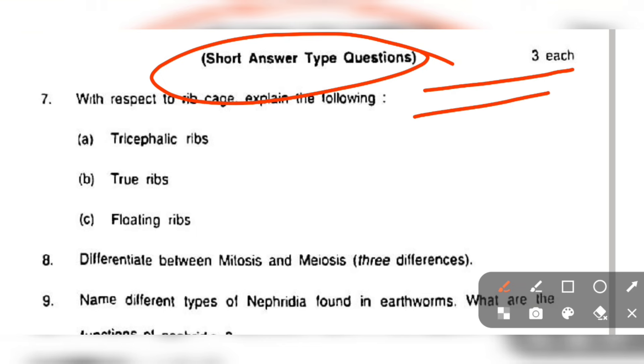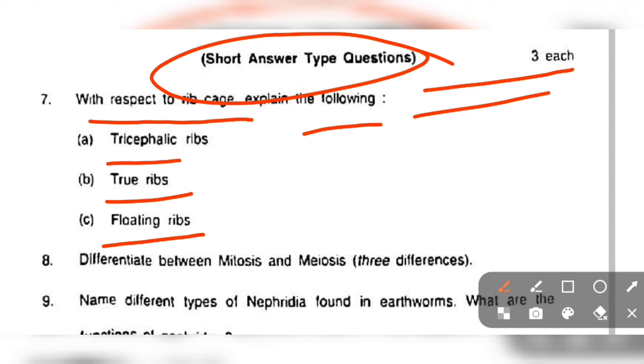With respect to rib cage, explain the following: tricephalic ribs, true ribs, and floating ribs. You can write everything.